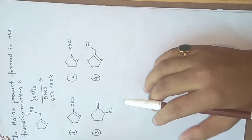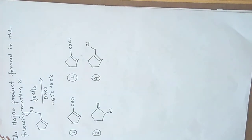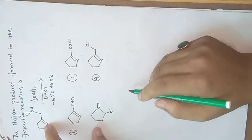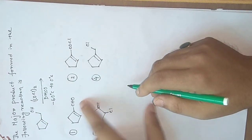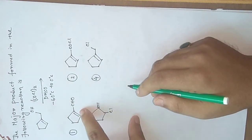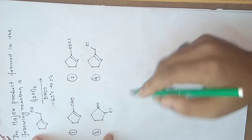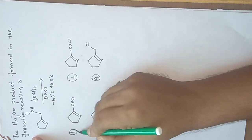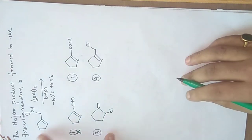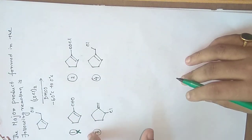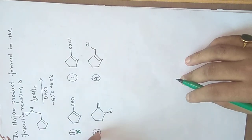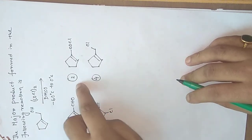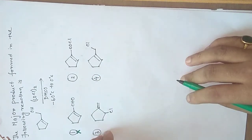Now, to predict what is the compound: since this is not Swern oxidation, alcohol does not give aldehyde here. Generally, Swern oxidation converts alcohol to aldehyde, so answer one is wrong — this does not give alcohol to aldehyde. So there are three possible answers: two, three, and four.